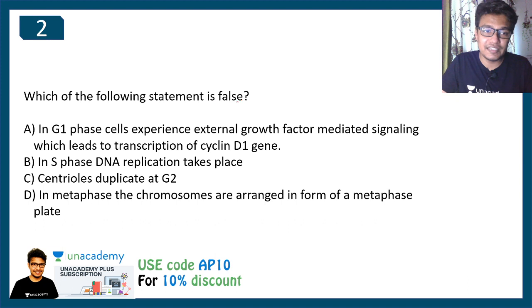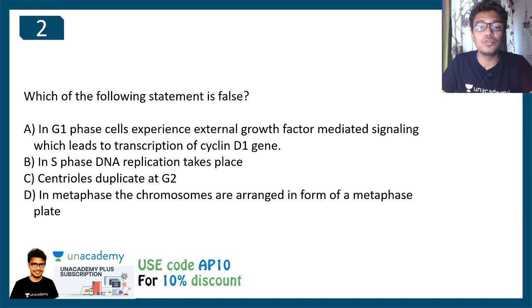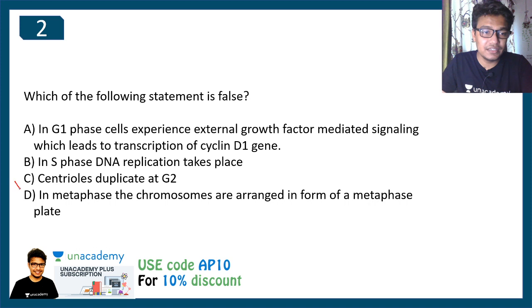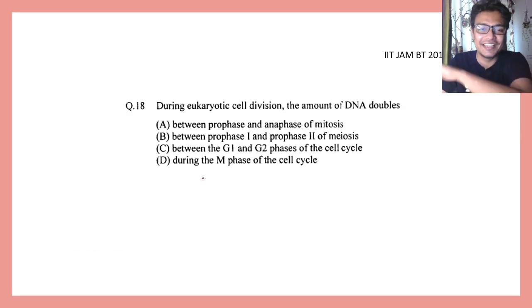Question two: which of the following is a false statement? Option A: in G1 phase, cells experience external growth factor-mediated signaling leading to transcription of the cyclin D1 gene. Option B: in S phase, DNA replication takes place. Option C: centrioles duplicate at G2. Option D: in metaphase, chromosomes are arranged in a metaphase plate. The correct answer is option C — centrioles do not duplicate during G2. If you know which phase centrioles actually duplicate in, let me know in the comments!